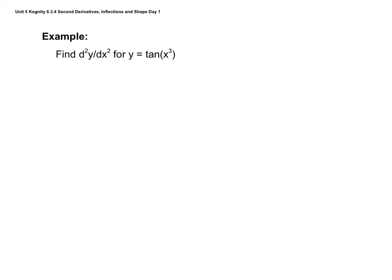Here's a trig example: finding the second derivative for y = tan(x³). To get the second derivative, we need the first derivative. The derivative of tangent is secant squared, and the inside x³ stays the same. But we also handle the x³ by multiplying by 3x² — we're using the chain rule here.